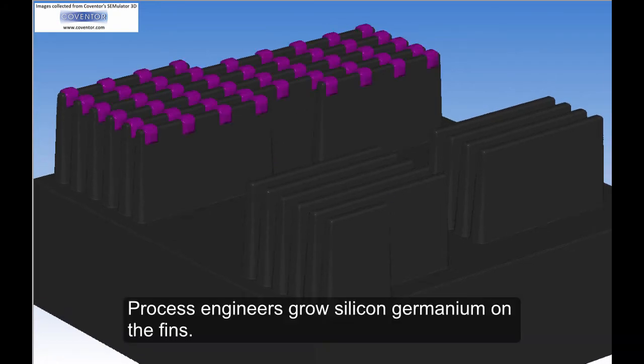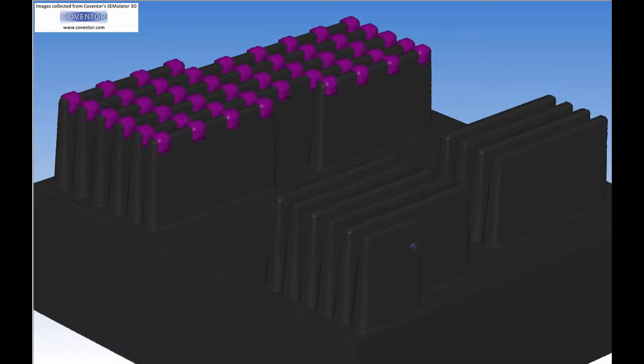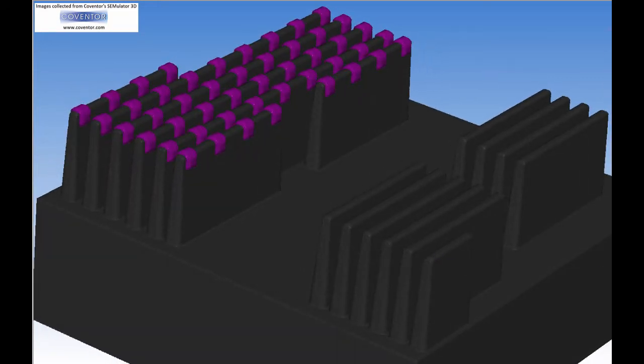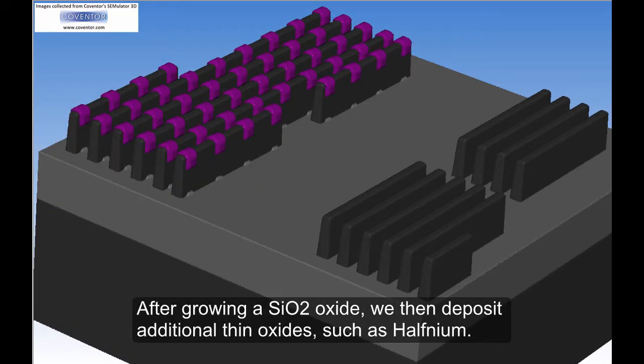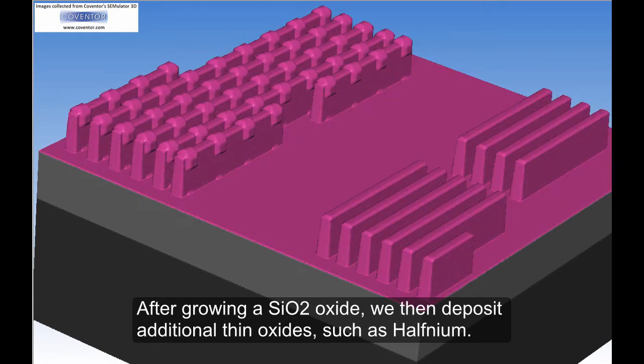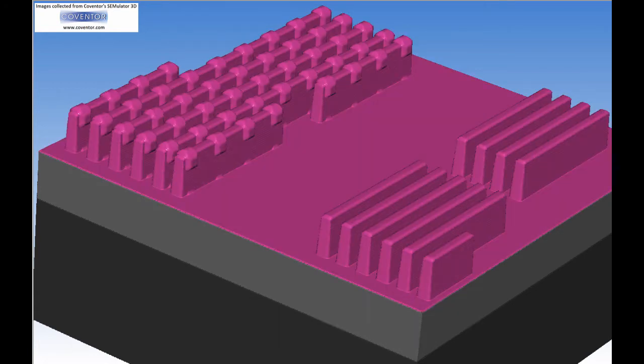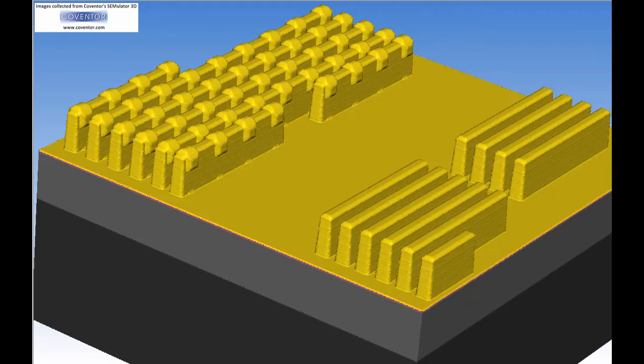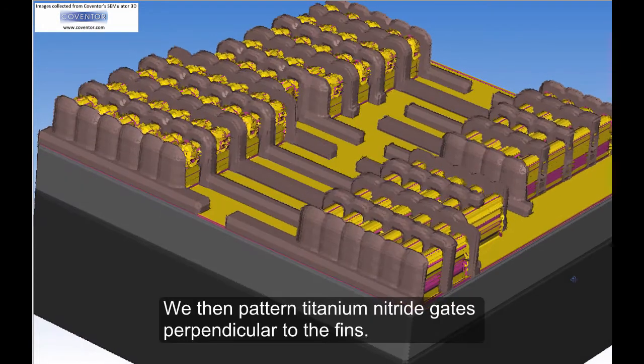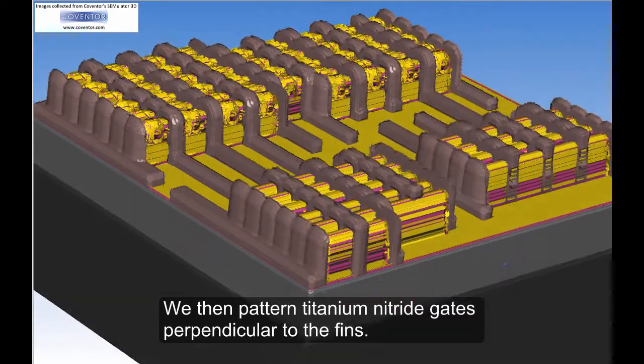Process engineers grow silicon-germanium on the fins. After growing a silicon dioxide oxide, we then deposit additional thin oxides, such as hafnium. We then pattern titanium nitride gates perpendicular to the fins.